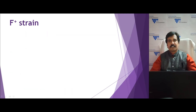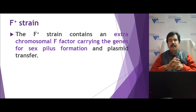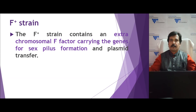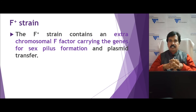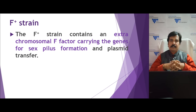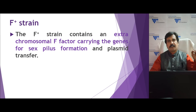The F plus strain is a bacterium that carries a fertile factor, which is generally present as extrachromosomal DNA — a plasmid. The bacterium contains chromosomal DNA and additionally an extrachromosomal circular double-stranded DNA plasmid, which carries the genes necessary for its own replication and for antibiotic resistance. Apart from that, it also carries the fertility factor needed for the synthesis of the pilus — that is, pilus formation genes.